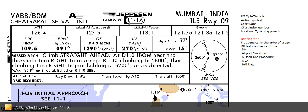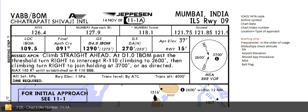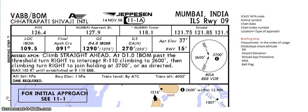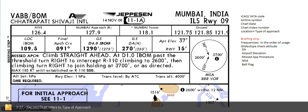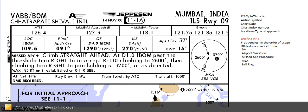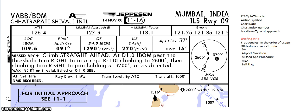Inside the chart index number you can see 11-1 Alpha. The first digit 1 stands for the airport — every airport has been allocated a different number, so here 1 stands for Mumbai. The second digit 1 stands for the type of approach: VOR, ILS, GPS, SID each have a different digit. The third digit is the filing order — here it is 1 Alpha, so 1 Bravo would come behind it.